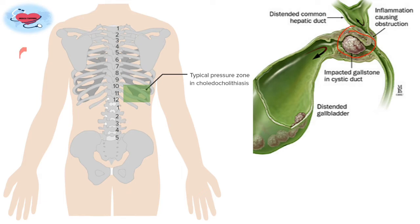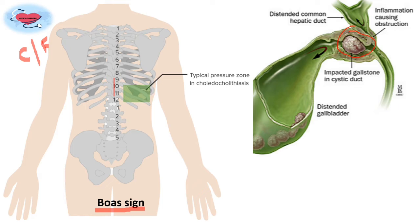Regarding clinical features, symptoms include sudden onset of pain in the right hypochondrium with tenderness, guarding, and rigidity. A palpable, tender, smooth gallbladder may also be present. Boas sign is an area of hyperesthesia between the 9th and 11th ribs posteriorly on the right side, and it occurs in acute cholecystitis. Jaundice may or may not be present. Associated fever, nausea, and constitutional symptoms may also occur.